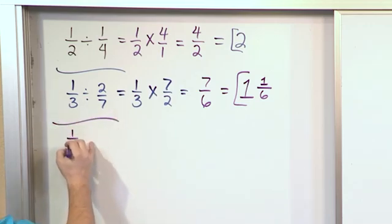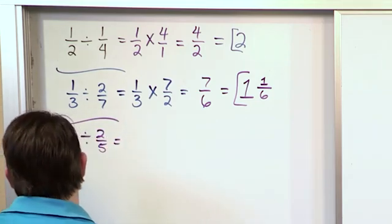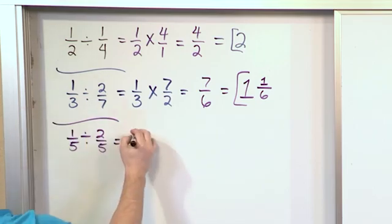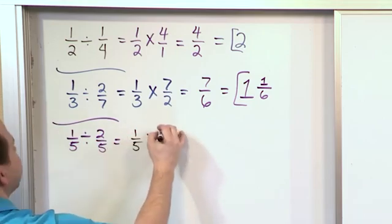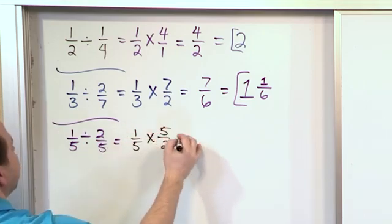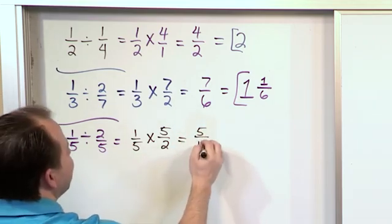What if we have 1 fifth and divide it by 2 fifths? So it's the same sort of story. What we're doing is we'll take the first fraction and leave it alone. 1 fifth. We'll take this and change it to multiplication. We'll take this and flip it over. Flip it upside down, 5 halves. And then now we just do multiplication. 1 times 5 is 5. 5 times 2 is 10.